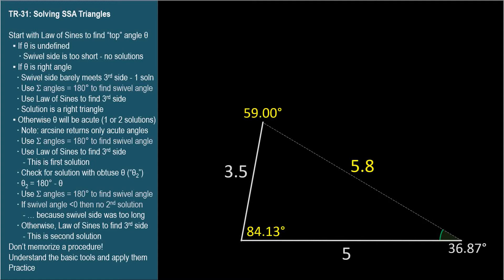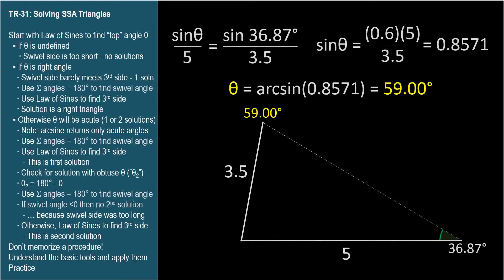Well, we're expecting two solutions, but we've only found one. Let's go back to the very first step to solving this triangle, which will be the law of sines, since we have an angle-side opposite pair.